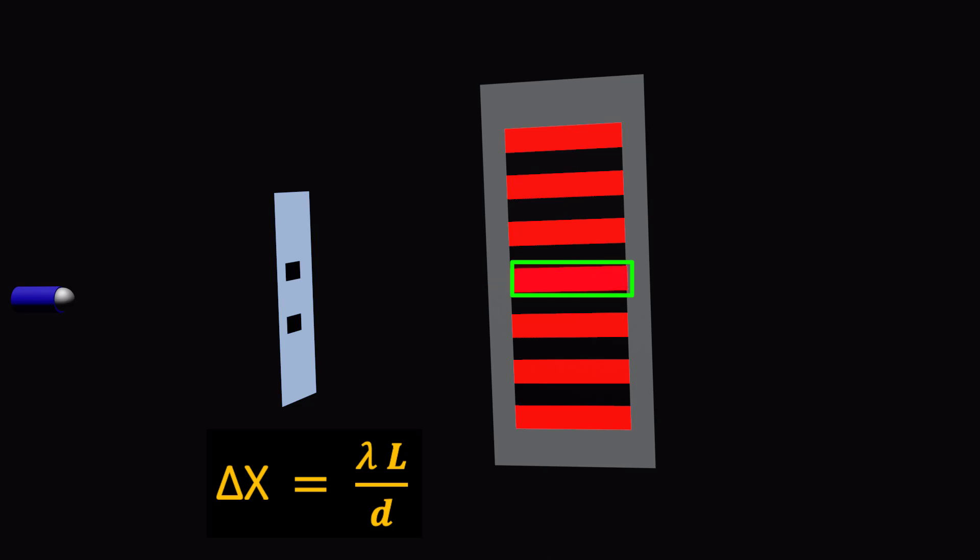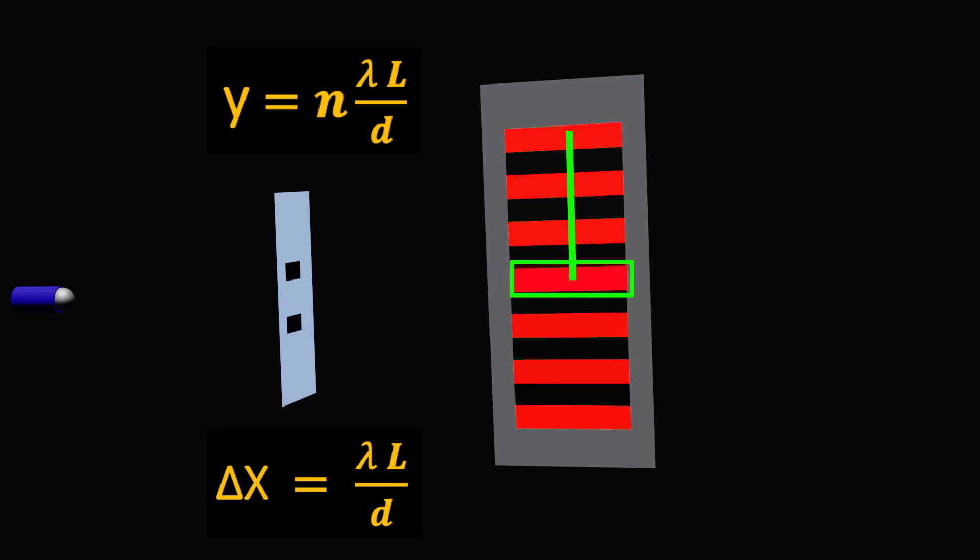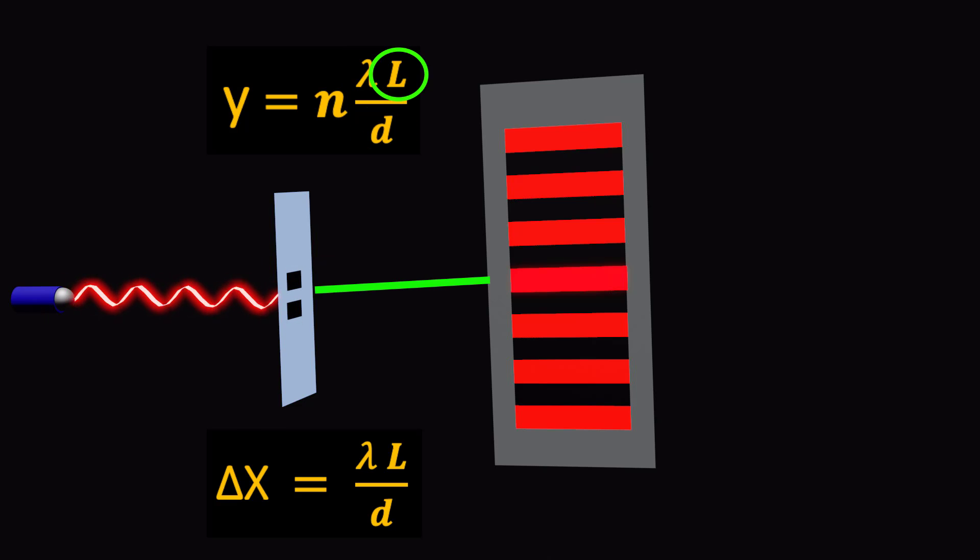Both fringe spacing and fringe position depend on several factors, including the wavelength of the light, the separation between the slits, and the distance between the slits and the screen.